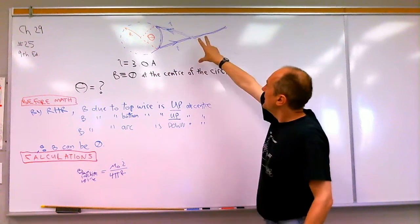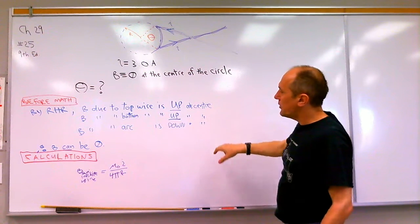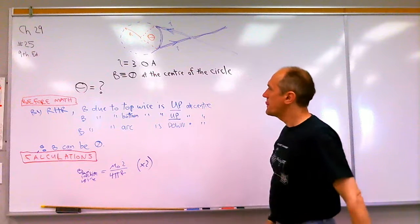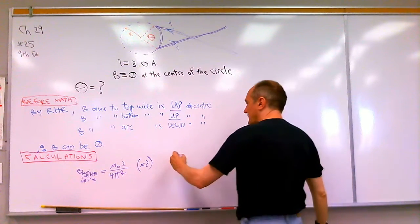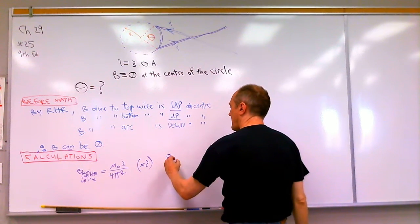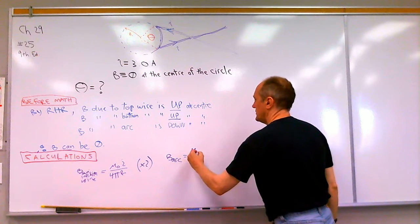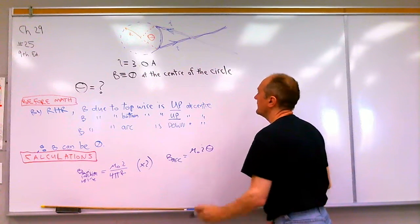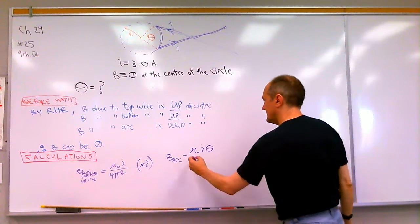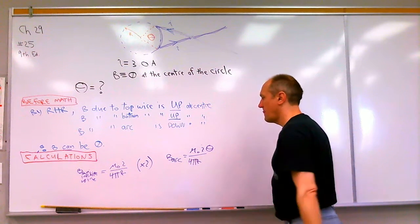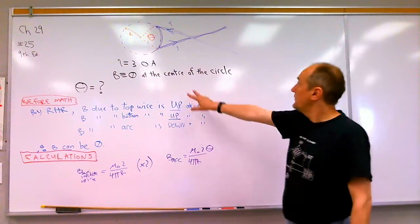Remember, because these two, everything is symmetric, and these two are both up, then we're going to have two of these. Now the magnetic field due to an arc is mu-naught i times the angle of the arc over 4 pi r. So that's the field due to the arc.